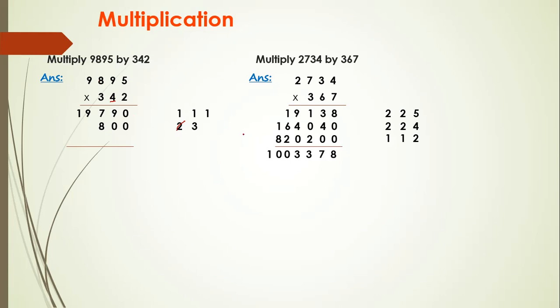4×8 = 32, 32 plus 3 = 35, write 5 here, carry 3 more. 4×9 = 36, 36 plus 3 = 39. After 9 no more digits, therefore I will write 39 here.